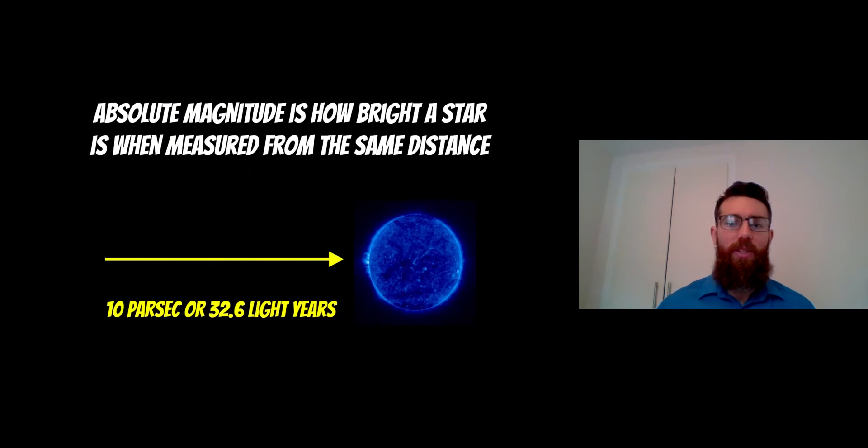The absolute magnitude is the magnitude or brightness of a star from some set distance. All stars are imagined to be measured from some set distance, which is 10 parsecs or 32.6 light years. It's the same distance each time, and that is the absolute magnitude.